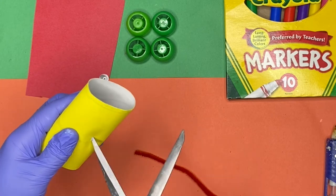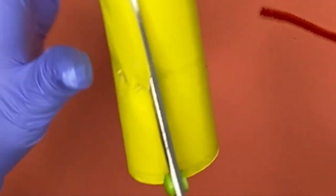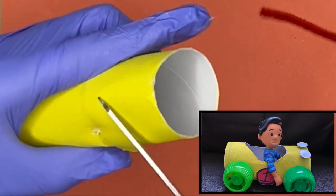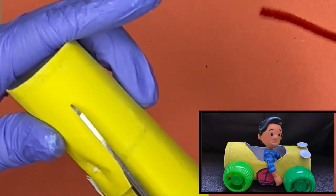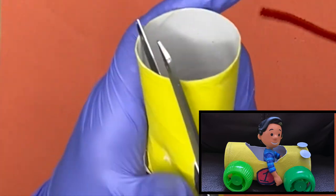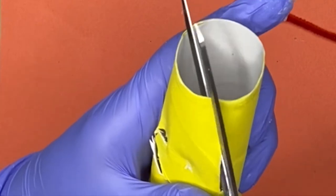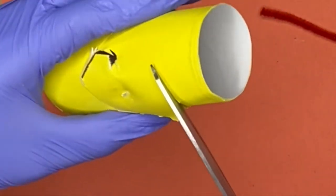And first we're going to go ahead and start by cutting out the top of our car. So if your kids want to put like, you know, a little action figure or a little GI Joe, if they want to put it in the car, they can do that. So go ahead and cut you out a little oval so that they can sit in it.